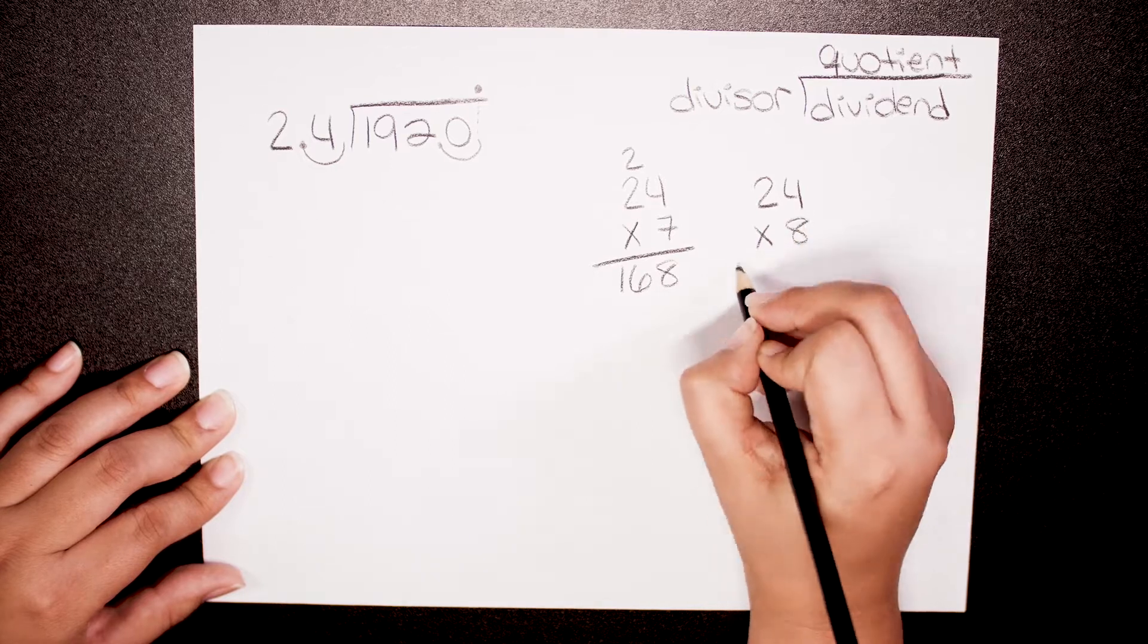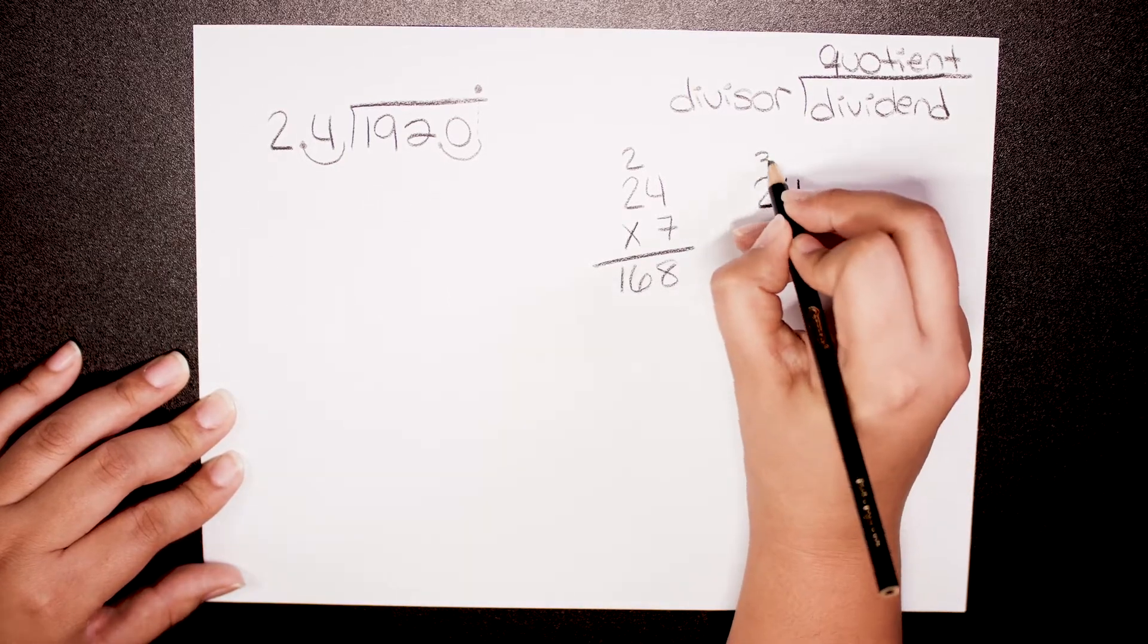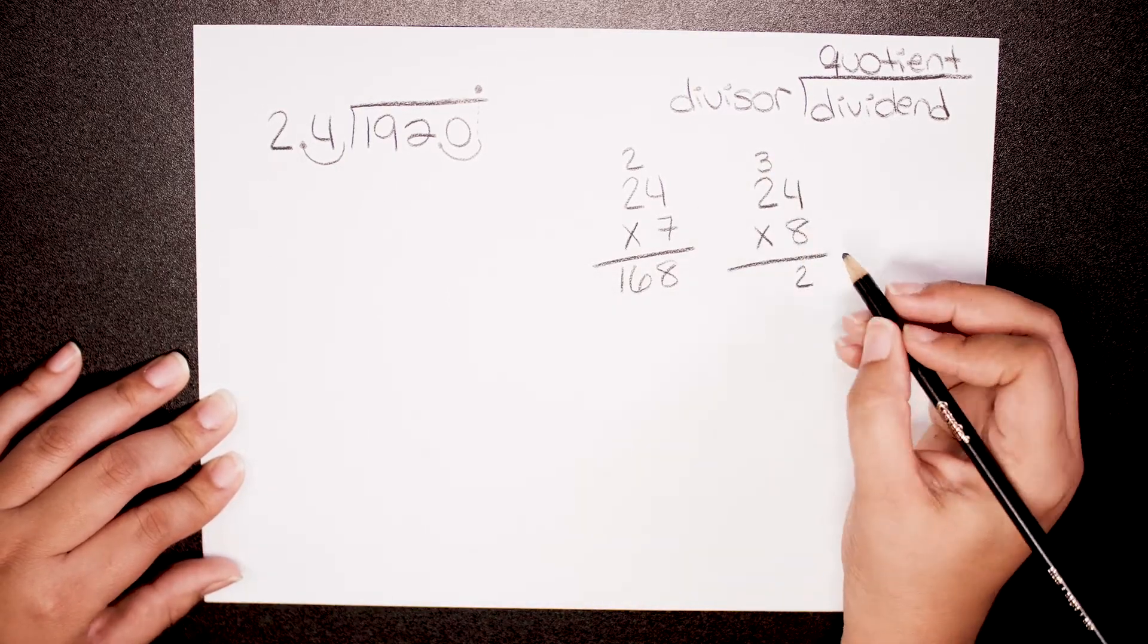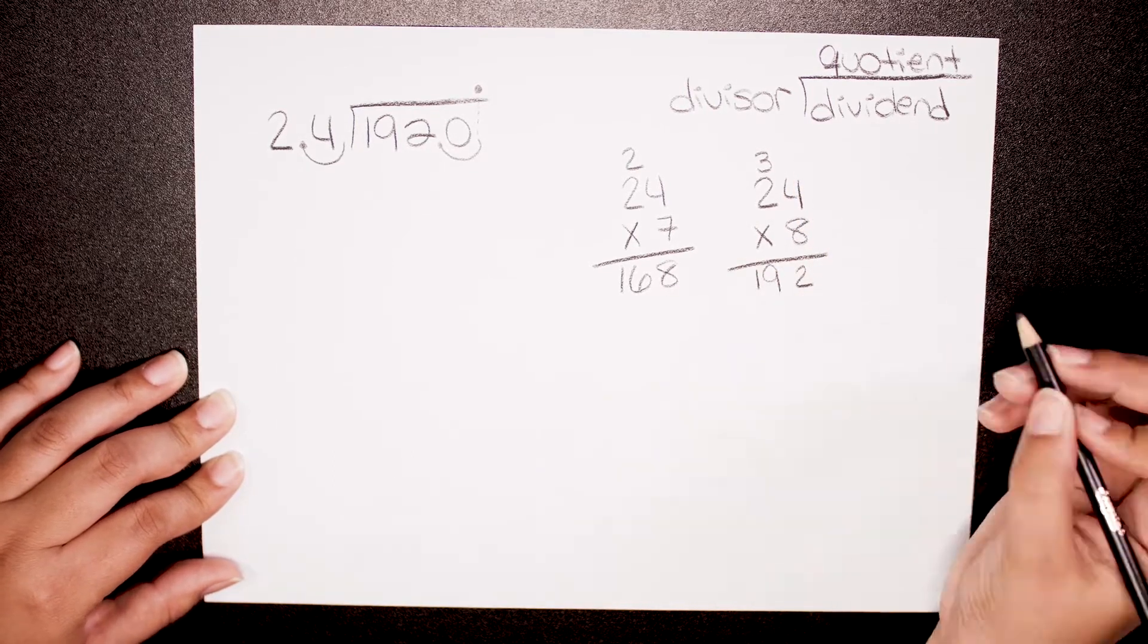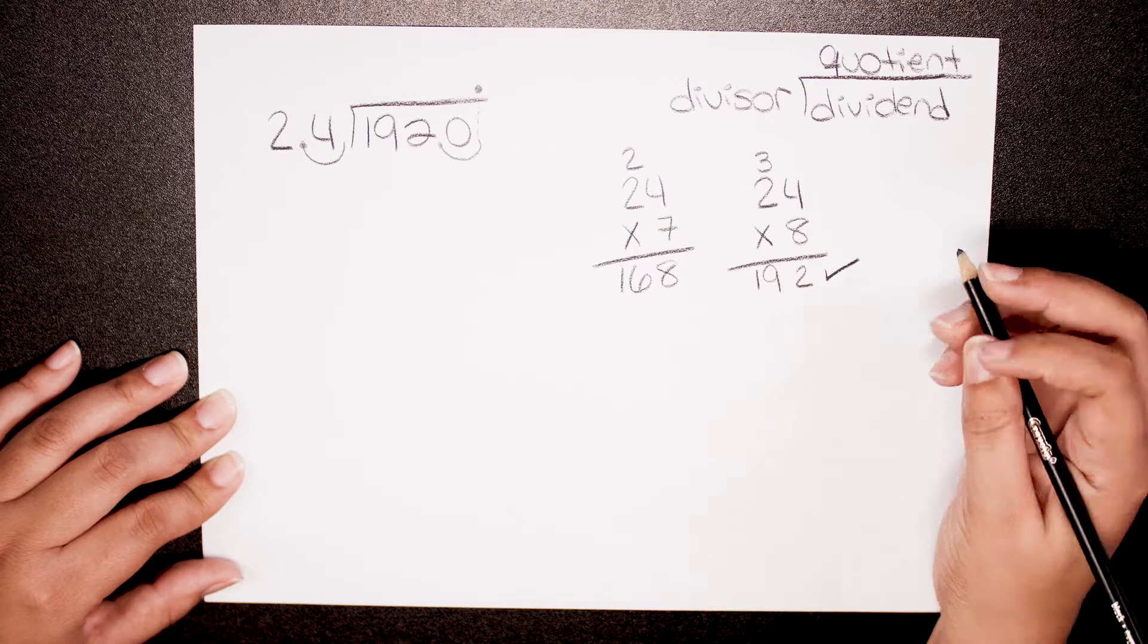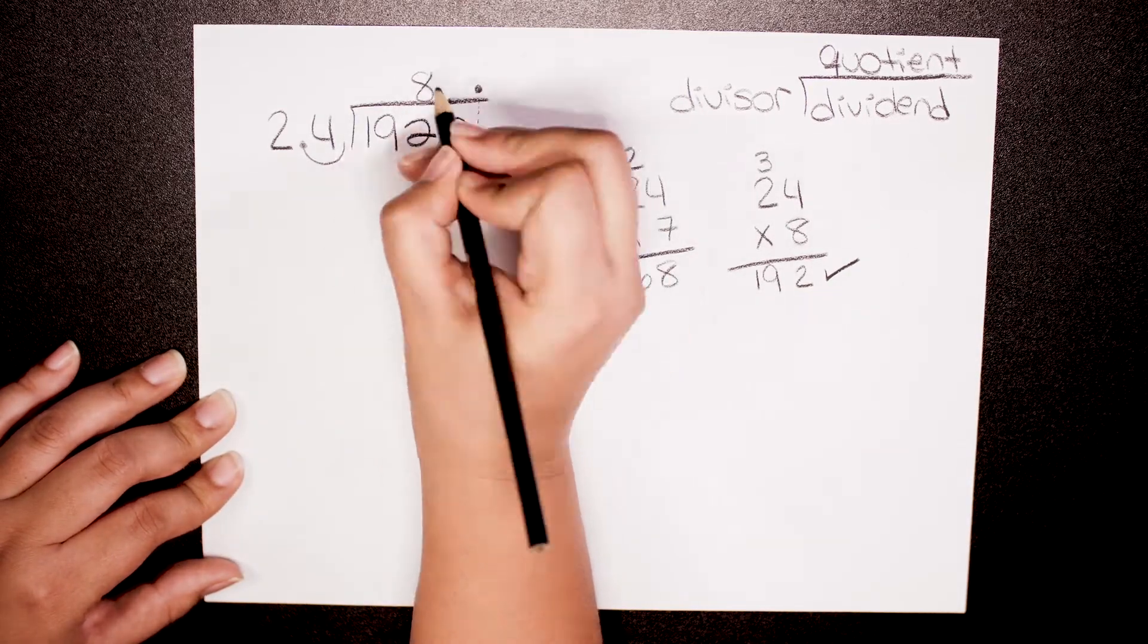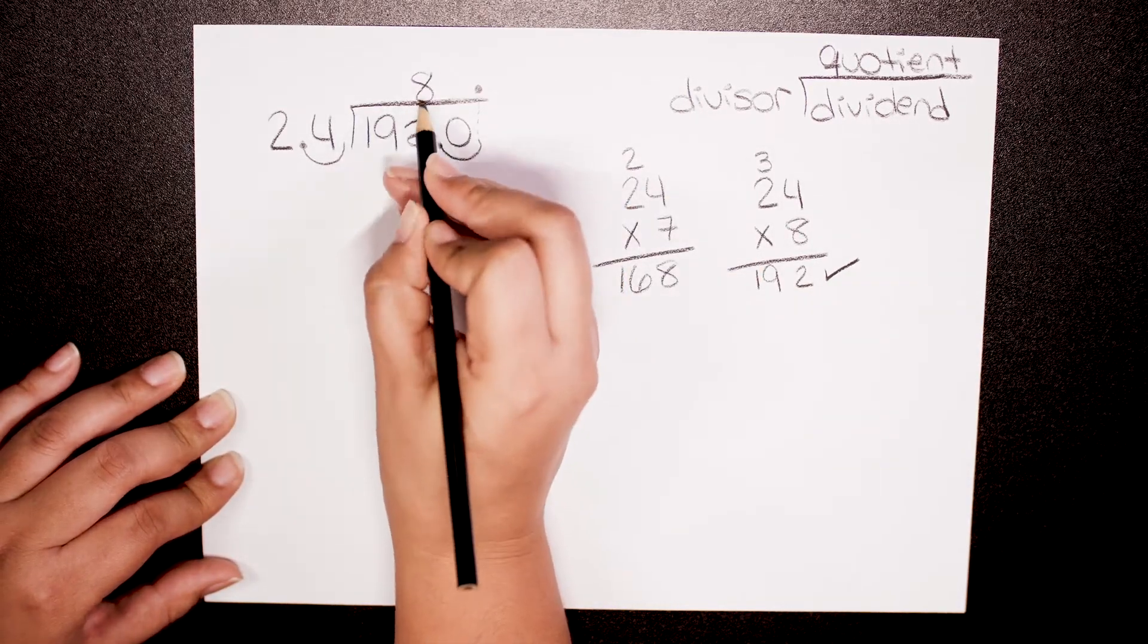8 times 4 is 32, 8 times 2 is 16 plus 3 is 19. I just got the same number that I'm looking for, perfect! So you put here 8, don't forget right on top of the 2.